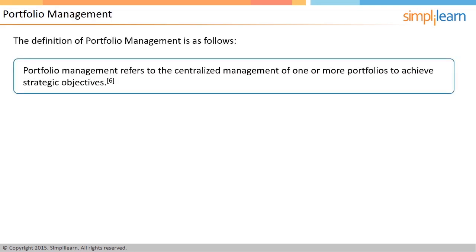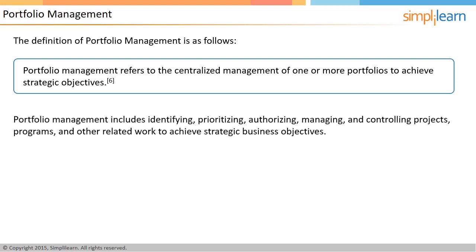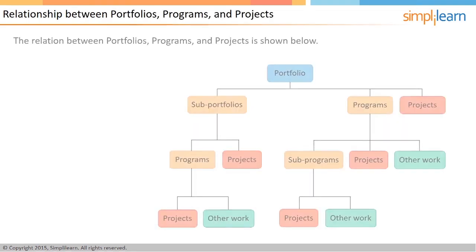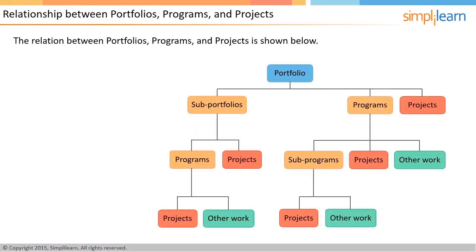Portfolio management is the centralized management of one or more portfolios. This includes identifying, prioritizing, authorizing, managing, and controlling projects, programs, and other related work to achieve strategic business objectives. Therefore, whether the company should have Japanese projects as a portfolio or not is decided by portfolio management. The image on the screen will help you understand the relationship between portfolios, programs, and projects.